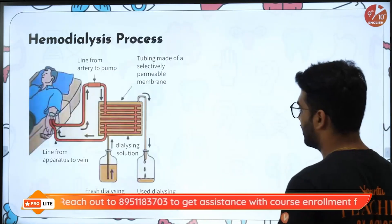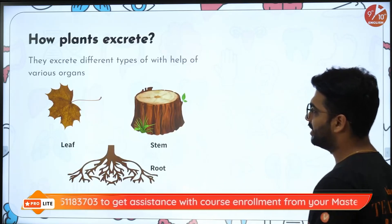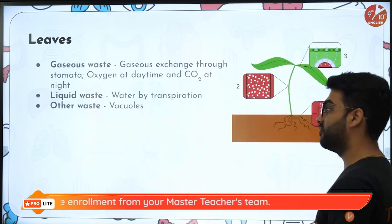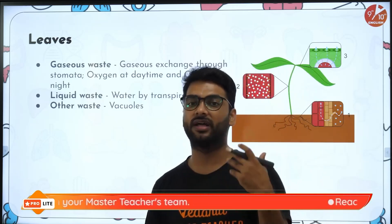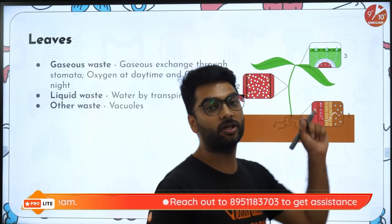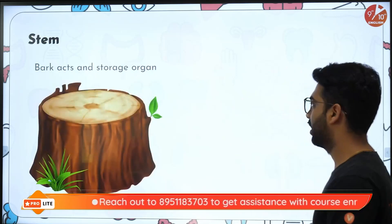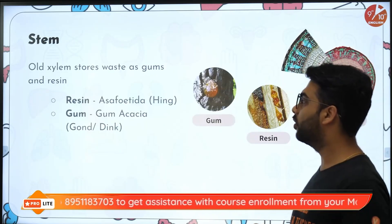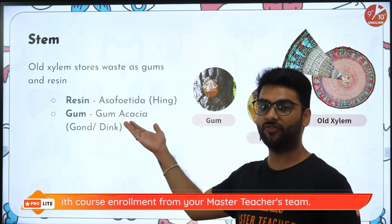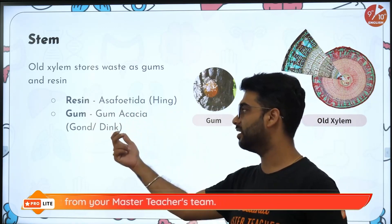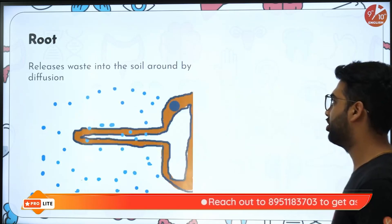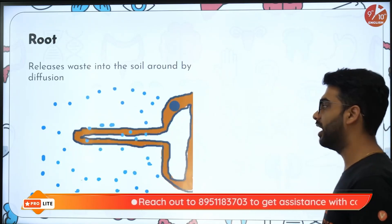When talking about excretion in plants, the process is a little different. Plants excrete through various means like shedding of leaves and shedding of the bark. As gaseous waste, plants give out carbon dioxide as a result of respiration. They give out water by the process of transpiration, and also give out water drops through the hydathodes. Bark acts as a storage organ. Old xylem stores waste as gum and resin — like asafoetida, which is a resin, and gum acacia, which is also an excretory product. Roots release waste into the soil around them by the process of diffusion.